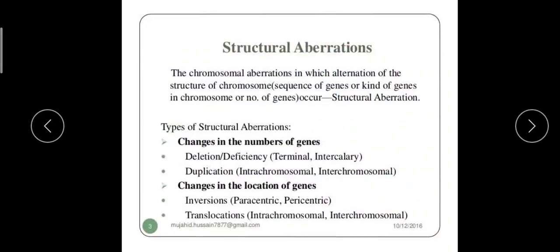Chromosomal aberrations in which alteration of the structure of a chromosome occurs is known as structural aberration. Structural aberrations are basically four types, and here we can classify them under two subheadings. The first is changes in the number of genes — structural aberrations which cause changes in the number of genes are two: deletion and duplication.